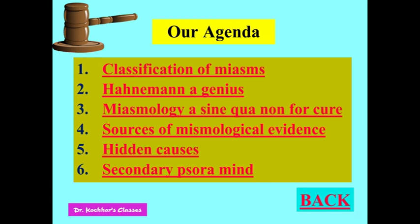There are many definitions of miasms and the word miasms has been invoked before Hahnemann also, but with Hahnemann it has got a special connotation because he introduced this word specially for chronic diseases — particularly that of psora. Hahnemann emphasized the word miasms and it became synonymous with psora, the itch theory, as it was called at the time of Hahnemann, and Hahnemann was recognized for this particular concept of miasms.